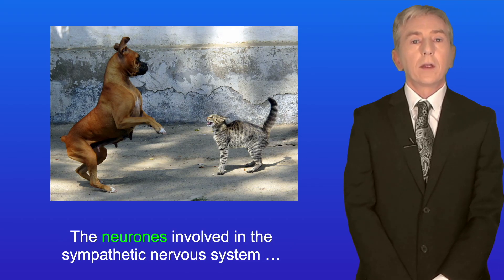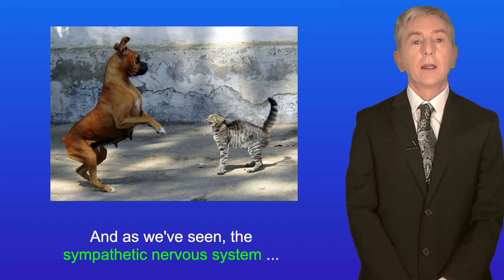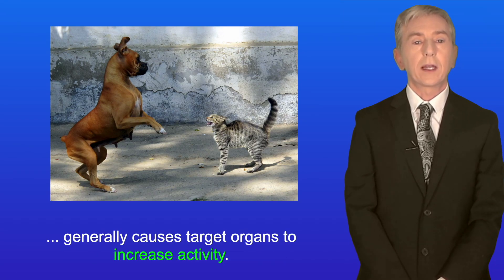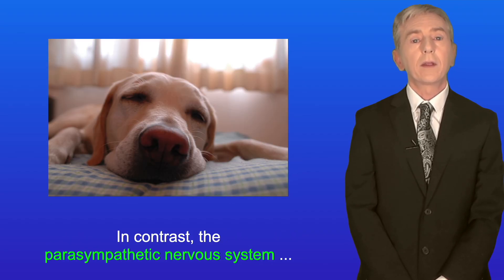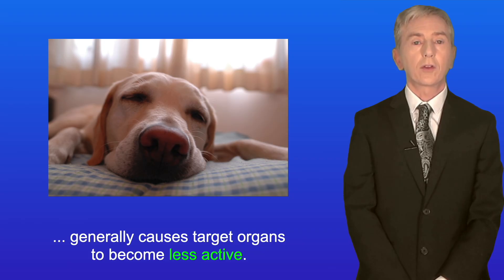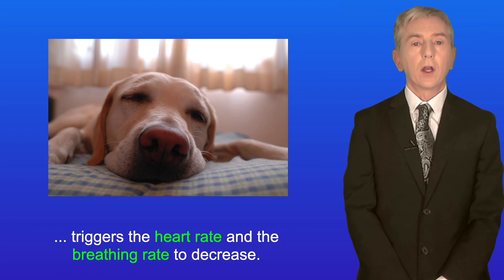The neurons involved in the sympathetic nervous system release the neurotransmitter noradrenaline when they reach their target organs, and the sympathetic nervous system generally causes target organs to increase activity. In contrast, the parasympathetic nervous system generally causes target organs to become less active. For example, when we're resting or asleep, the parasympathetic nervous system triggers the heart rate and the breathing rate to decrease.